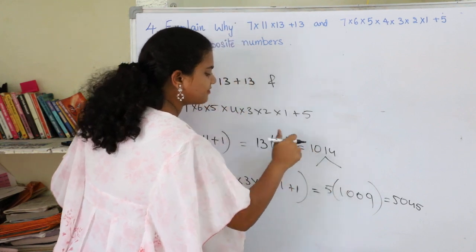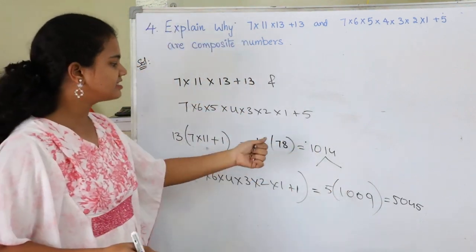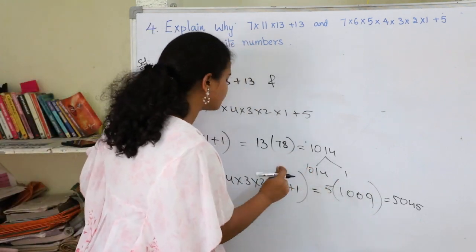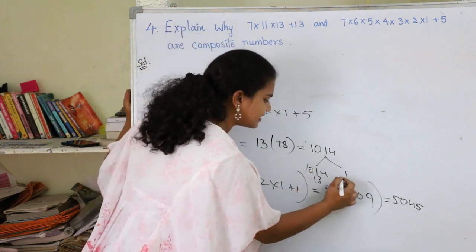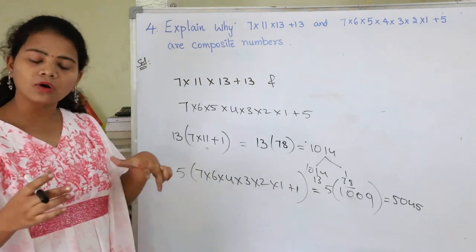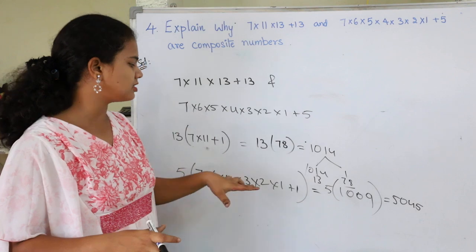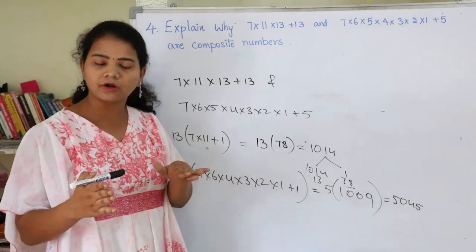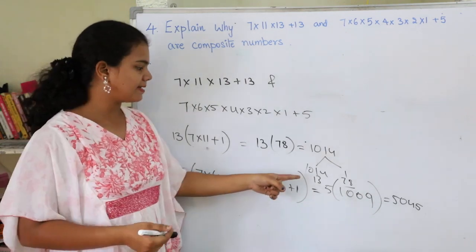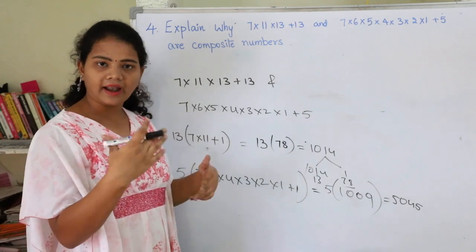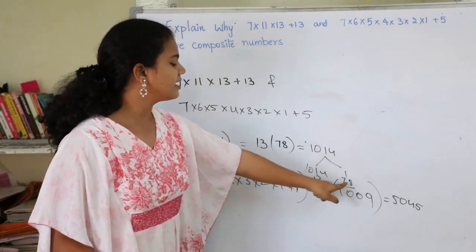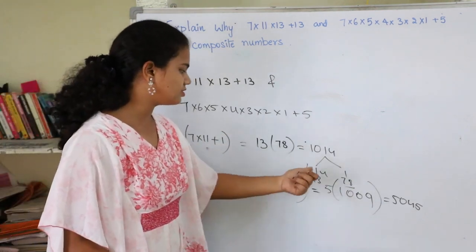The factors of 1014 are not only 1014 and 1, but also 13 and 78. In composite numbers, not only the number and 1 are factors, but we have more factors. If you get more factors than 1 and the number itself, that's known as a composite number. Here I got 13 and 78 as factors for 1014.